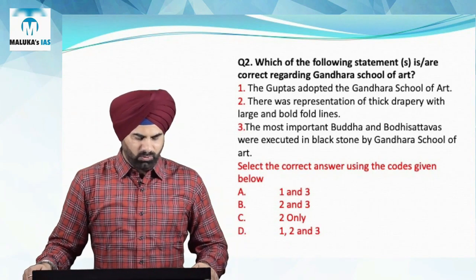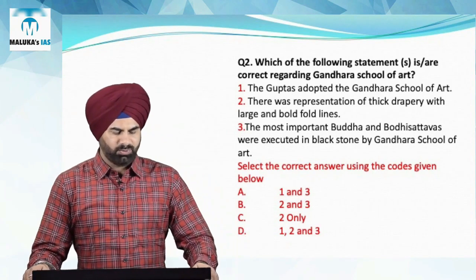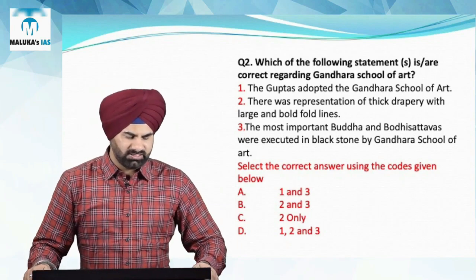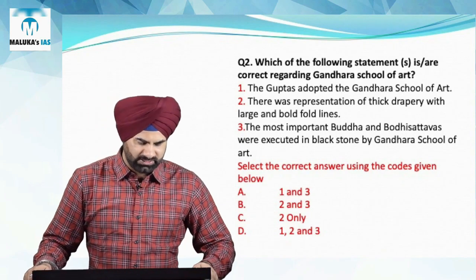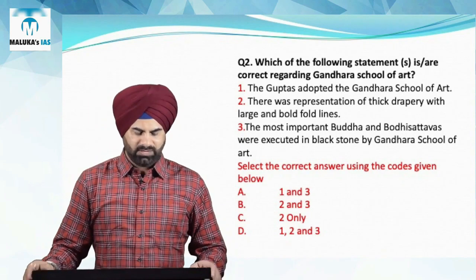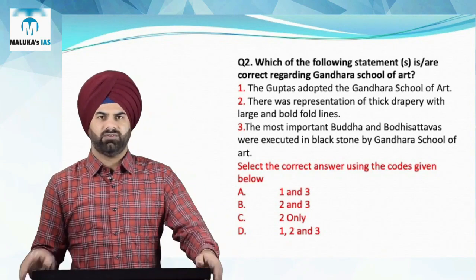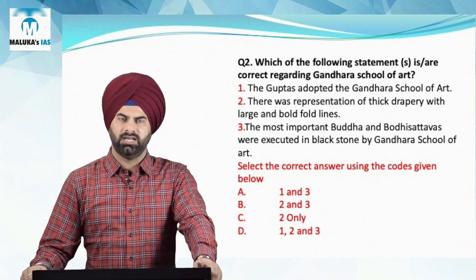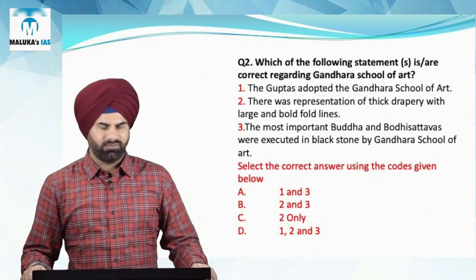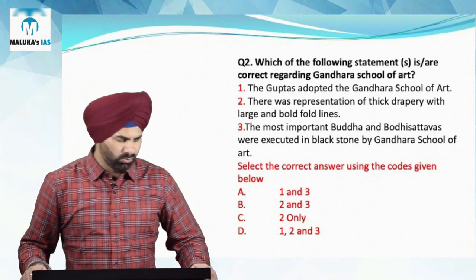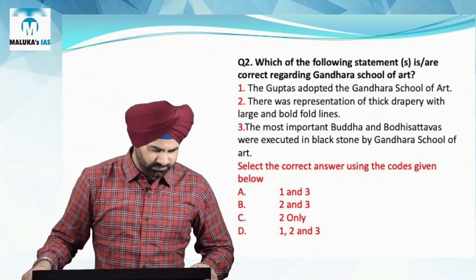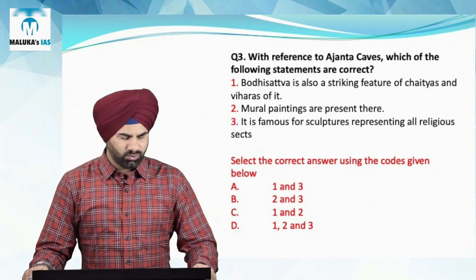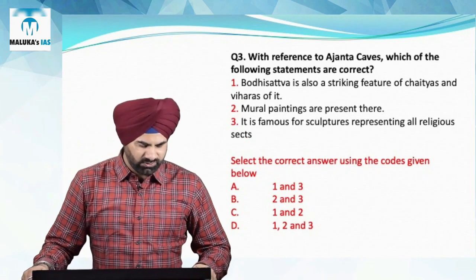The third statement — that the most important Buddha and Bodhisattva figures were executed in black stone by the Gandhara school of art — is also correct. Black stone was used by the Gandhara school. Statements two and three are correct, therefore for question number two, B becomes the answer.